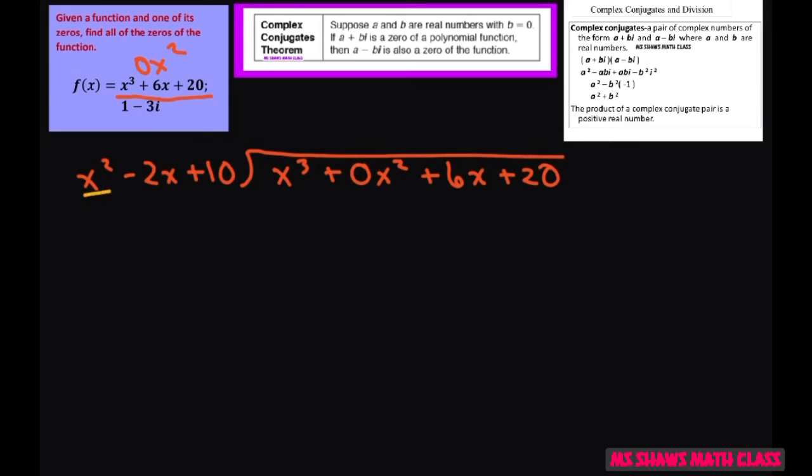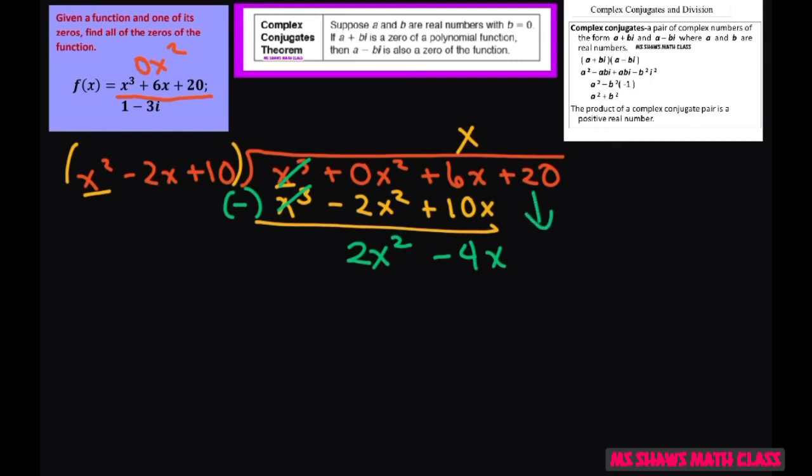Now what times x squared gives me x cubed? That's just going to be x. So multiply x times all of this, and you get x cubed minus 2x squared plus 10x. And then we subtract each term. So that goes away. And 0 minus a negative 2 is positive 2. 6 minus 10 is going to be minus 4x. And then bring down your 20.